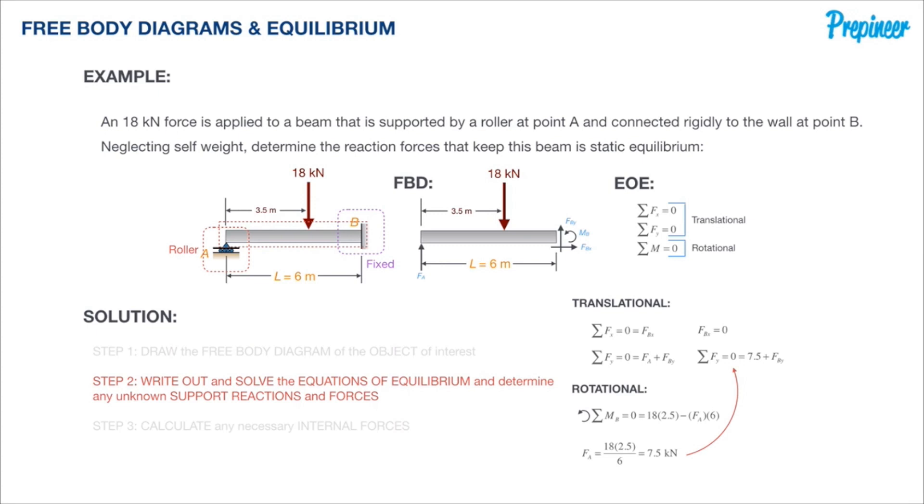Doing the same for our y components, we sum them all up. We have three components: sum of y components equals F sub A plus F sub By minus 18 kilonewtons.